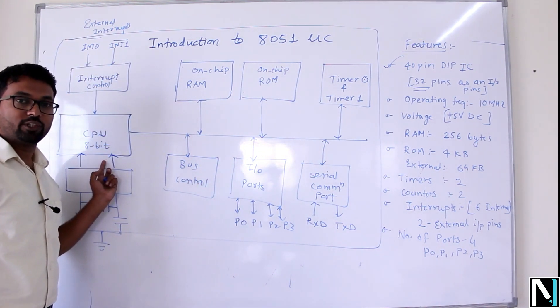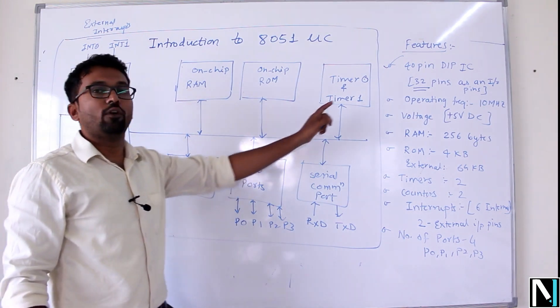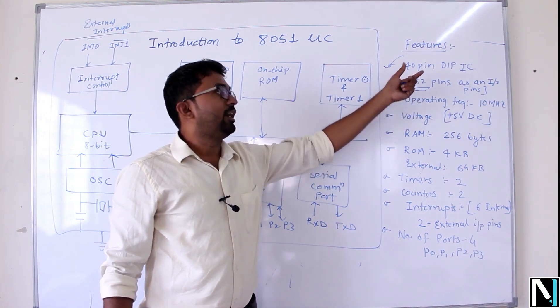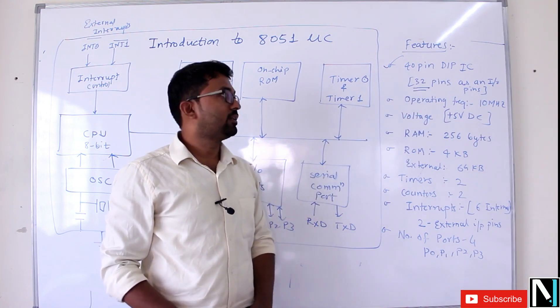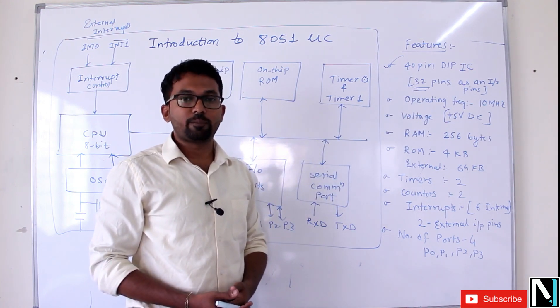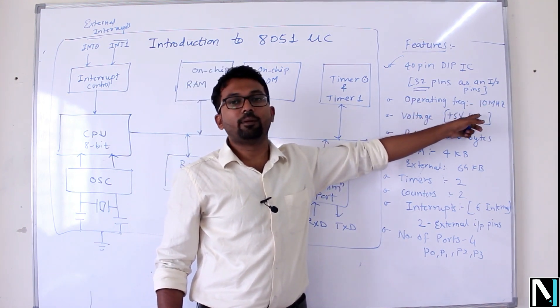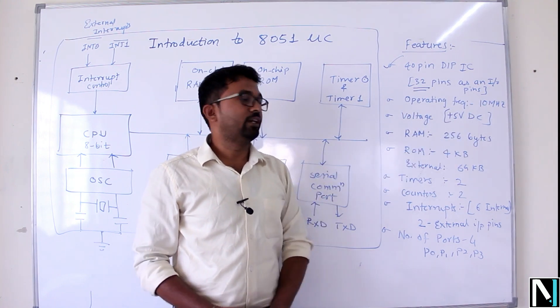It has an 8-bit CPU. That is the first important feature, meaning it can process 8 bits of data at a time. This is a 40-pin DIP package IC. It has 32 pins which can be used as input-output pins. 8 pins are special purpose pins. The operating frequency is maximum till 10 megahertz. The operating voltage is plus 5 volt DC.